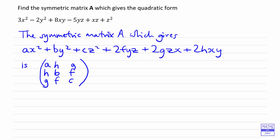So it's very simple to write down the matrix for our example. Let's start by writing down the main diagonal: the coefficient of x² is 3, the coefficient of y² is negative 2, and the coefficient of z² is 1.